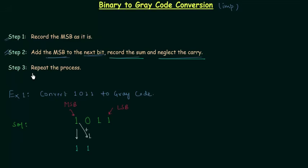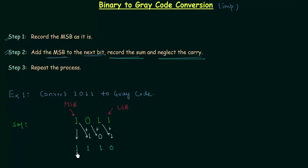We repeat this process — every time we record the sum and neglect the carry. Taking 0 and adding it with 1 gives 1. Then taking 1 and adding it with 1 gives sum 0 with carry 1; we neglect the carry. So we are left with 1 1 1 0. This is our answer — this is the grey code.